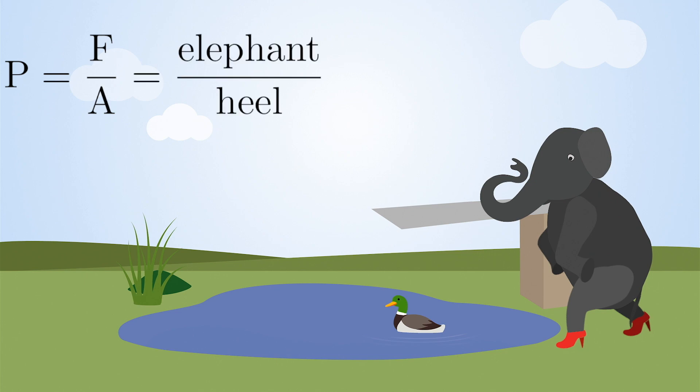The elephant weighs about 6,000 kilograms, and the area of a stiletto heel might be one centimeter squared. That gives us 0.6 GPa, which is only just over half of the pressure the squalene is under when it solidifies.